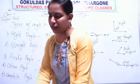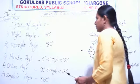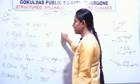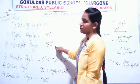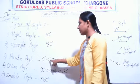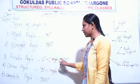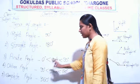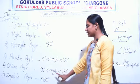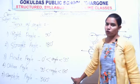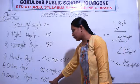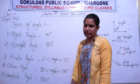So these were the types of angles: right angle measures 90 degrees, straight angle measures 180 degrees, acute angle is between 0 degrees and 90 degrees, obtuse angle is between 90 degrees and 180 degrees, and complete angle is 360 degrees.